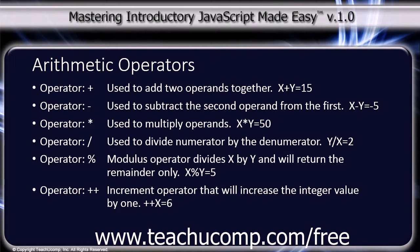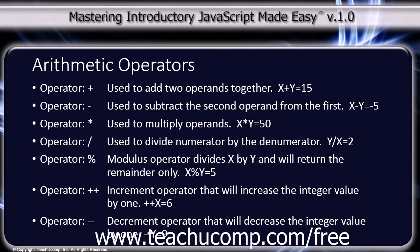The next operator is the double plus sign, which is an increment operator that will increase the integer value by 1. For example, ++x equals 6. And the final operator is the double hyphen or double minus sign, which is a decrement operator, and will decrease the integer value by 1. For example, --y equals 9.